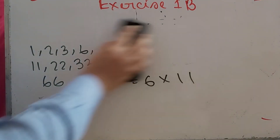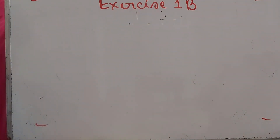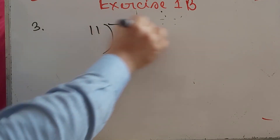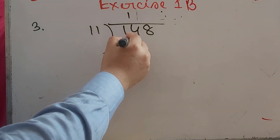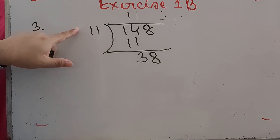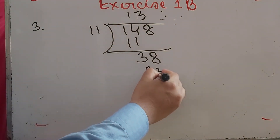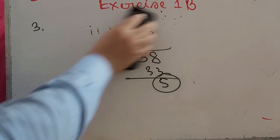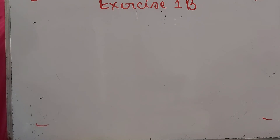Number 3: Is 148 a multiple of 11? We divide 148 by 11. 11 times 1 is 11, leaving 38. Since 11 times 3 is 33, there is a remainder. Because there is a remainder, 148 is not divisible by 11, so 148 is not a multiple of 11.